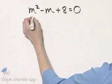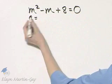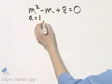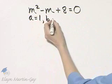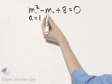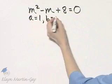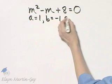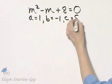So I'm going to now go to the quadratic formula. Remember, A is the coefficient of the squared variable, so A is 1. B is the coefficient of, in this case, m, so B is negative 1, and C is the constant, in this case, 8.